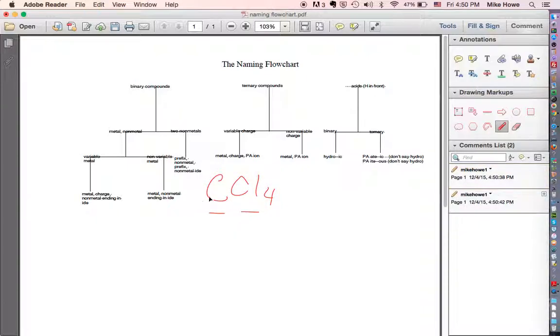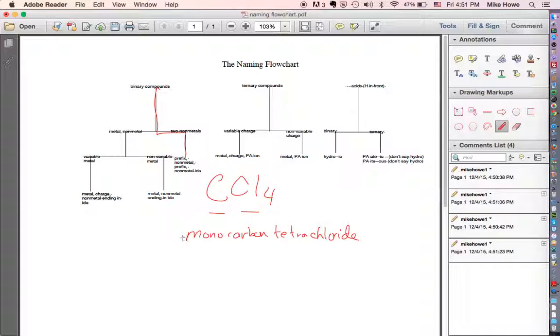So what we're going to do then is go down our chart. Binary compounds: is it a metal and a non-metal, or two non-metals? Well, carbon and chlorine are both non-metals, so that takes us over here. In that case, what you do is say the prefix for the first non-metal and then a prefix for the second non-metal ending in '-ide.' So you could say monocarbon tetrachloride. But by convention, we don't say mono if there's one atom of the first element, so you just call that carbon tetrachloride.